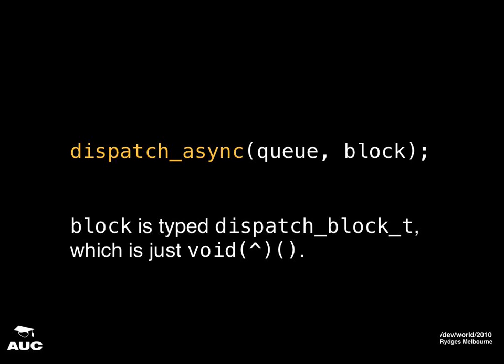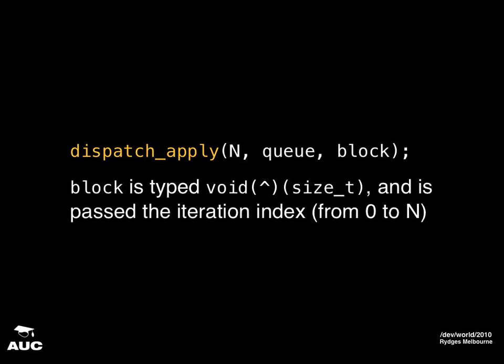To get work onto a queue, you call dispatch_async. It takes the queue and the block — typed as dispatch_block_t, which is a block that takes nothing and returns nothing. dispatch_apply is another useful one: it's like a parallel for loop. You give it how many times you want the block pushed onto the queue, and the block receives as its only parameter the index of which instance it is. dispatch_apply will wait until the last block is finished, whereas dispatch_async returns immediately.